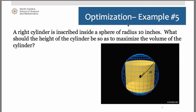Here we have a right cylinder inscribed inside of a sphere of radius 10 inches. Make sure you're reading this correctly. It's the sphere that has the radius of 10 inches.